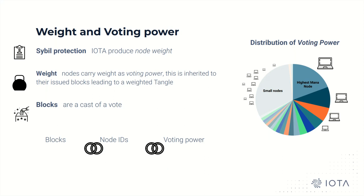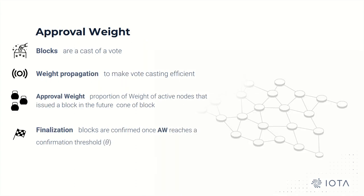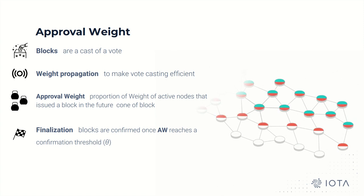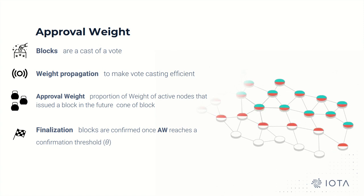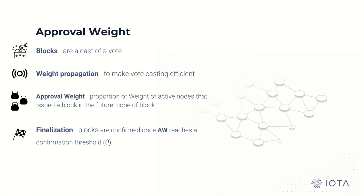To achieve Sybil protection in this protocol, each node has a score called weight as its voting power, and the weight is inherited by their issued blocks, so blocks are a cast of a vote. In this way, we link the voting power with the node ID and the block. Thanks to the DAG structure, we can easily propagate the weight backwards in time. For example, if you agree with a block, then you also agree with the parents of that block. We implement a very efficient voting mechanism by calculating the approval weight, which is calculated by summing up the block issuers' weights in its future cone. A block is confirmed once its approval weight reaches a confirmation threshold of 66% in our experiment.